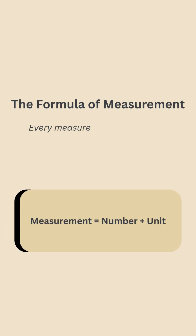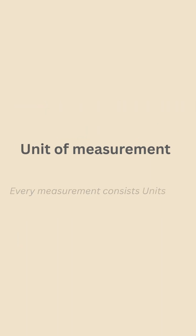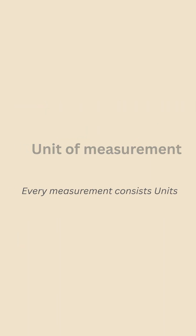In the measurement unit, every measurement has two parts: a number and a unit. For example, five meters. Every measurement consists of units.